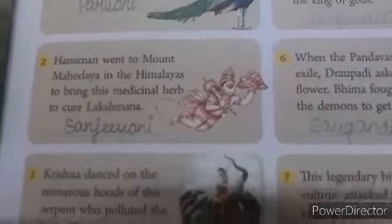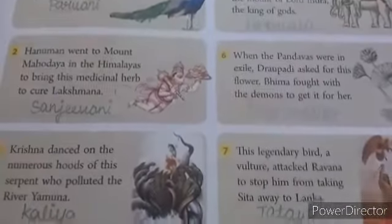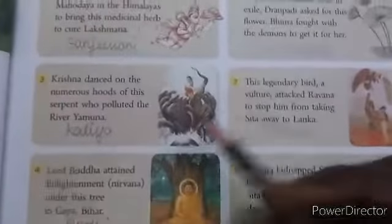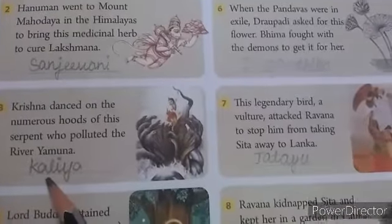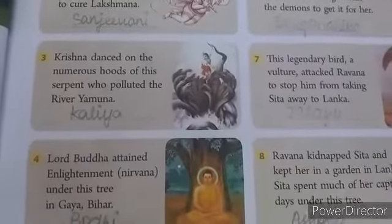Next one: Hanuman went to Mount Mahodaya in the Himalayas to bring this medicinal herb to cure Lakshmana. That herb name is the Sanjivini herb. Third one: Krishna danced on the numerous hoods of the serpent who polluted the river Yamuna. That serpent's name is Kaliya. Next one: Lord Buddha attained enlightenment — Nirvana — under this tree in Gaya. That tree's name is the Bodhi tree.